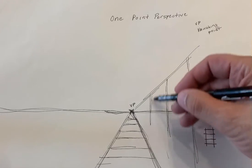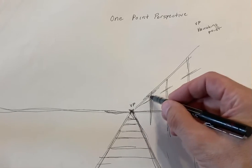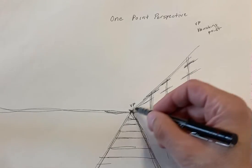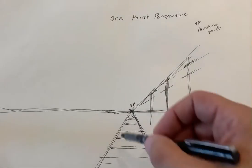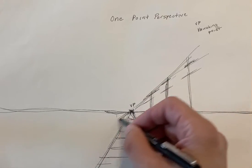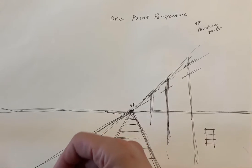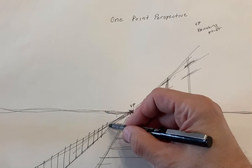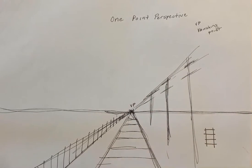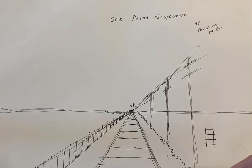Keeping the lines perfectly vertical, I now have telephone poles. I have a fence, and maybe there's a little gravel that separates the telephone poles from the train tracks.